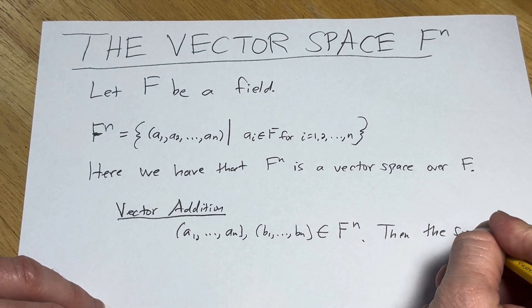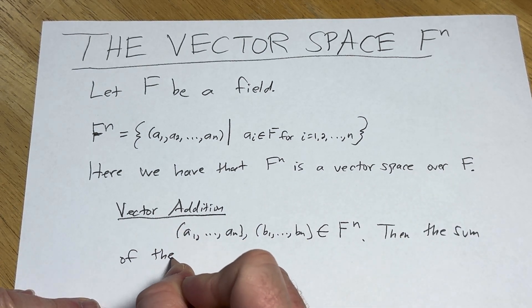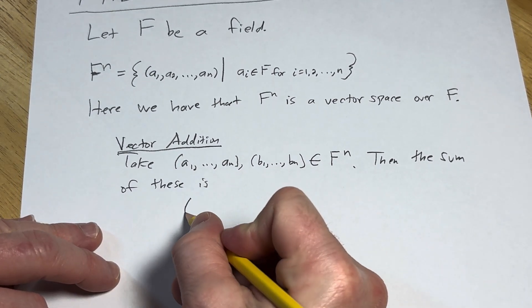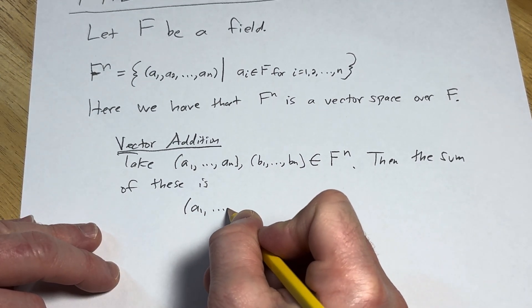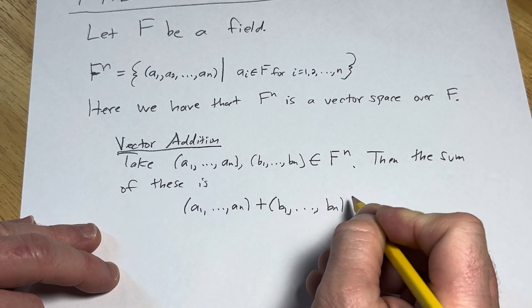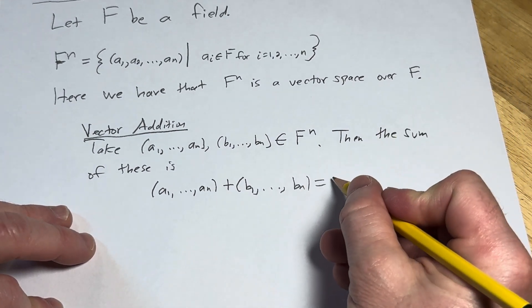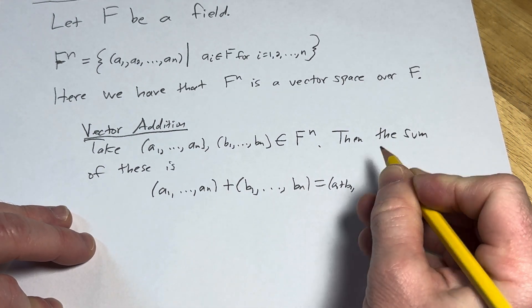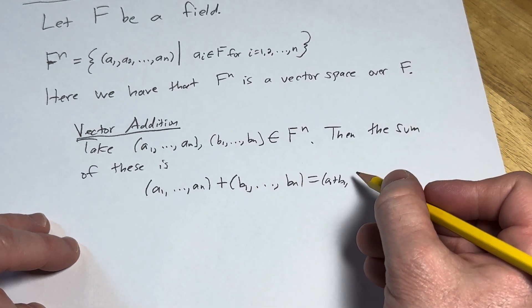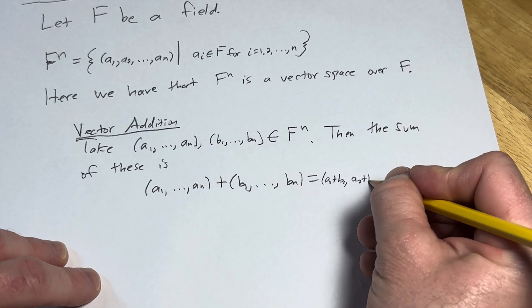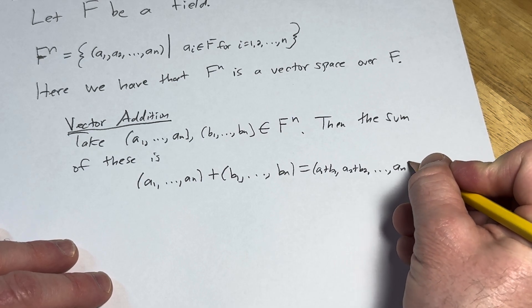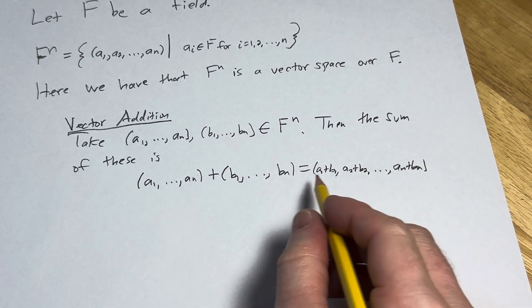Then the sum of these vectors is, well, what is it? It's just (a_1,...,a_n) plus (b_1,...,b_n). Well, what is that? Well, you just do component-wise addition. So you just add the corresponding entries. So it'll be a_2 plus b_2. And then at the end, you just add a_n to b_n there. So a_n plus b_n. Really nice. That's the vector addition.